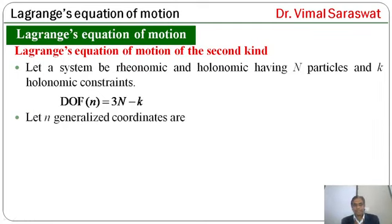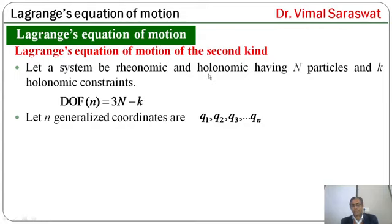Let n generalized coordinates be q1, q2, q3 up to qn. This system has n generalized coordinates q1, q2, q3, qn.